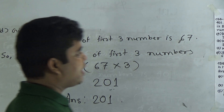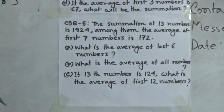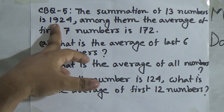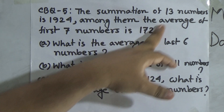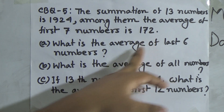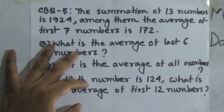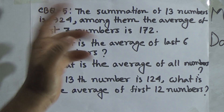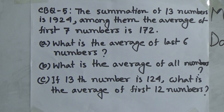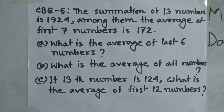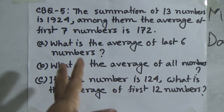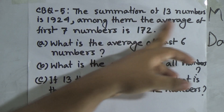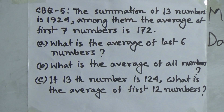This is today's class work. CBQ number 5 will be your SW. I will read the question: summation of 13 numbers is 1924. Among them, the average of the first seven numbers is 172. What is the average of the last six numbers? It is easy. At first, find out the summation of the first seven numbers, then subtract that from the total of 13 numbers to get the summation of the last six numbers, and then find the average of the last six numbers.